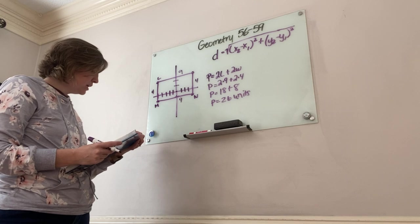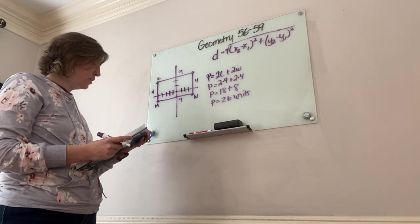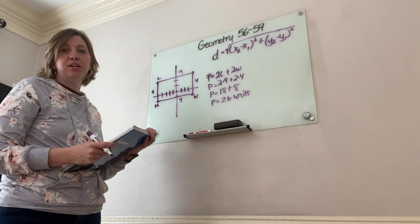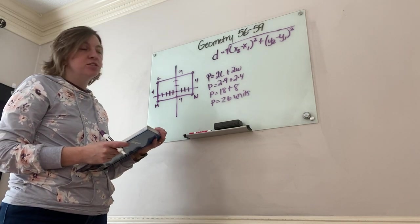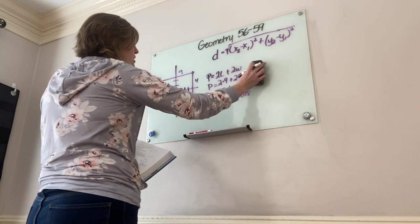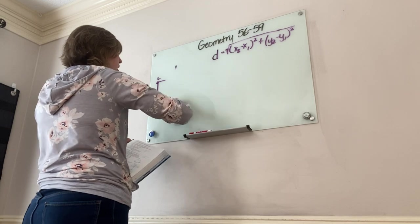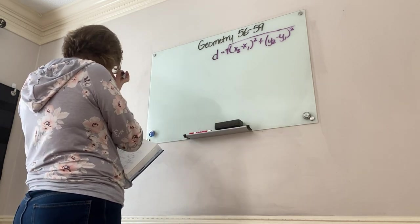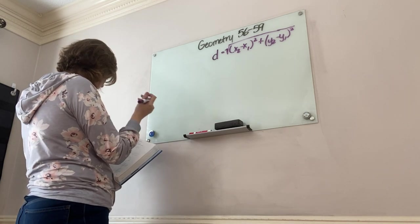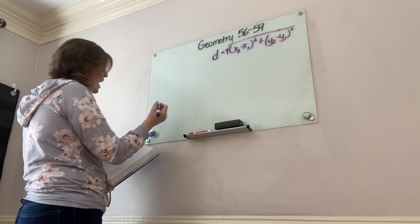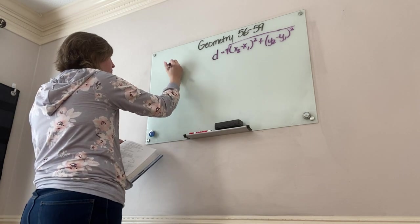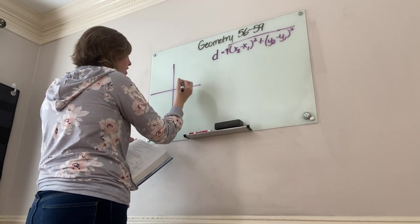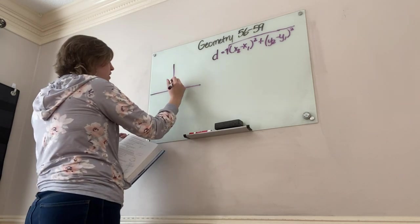Practice B asks for the perimeter of a triangle and says to round to the nearest hundredth — so this will take a few extra minutes. It's important to set this up carefully to understand it for coming lessons.